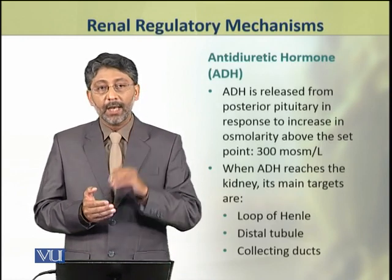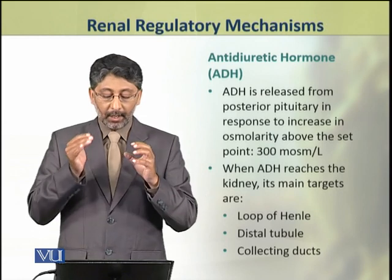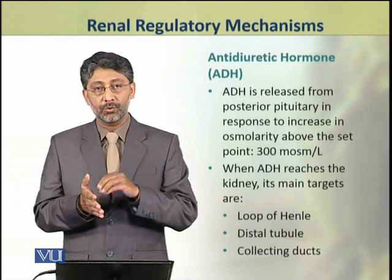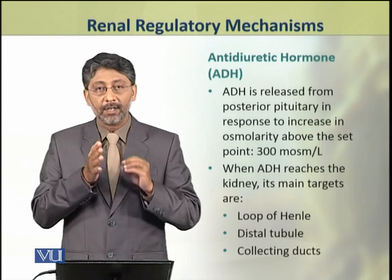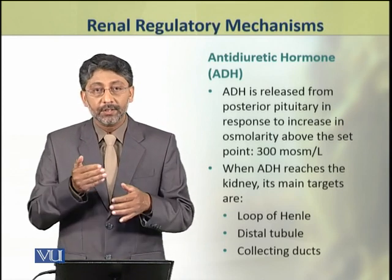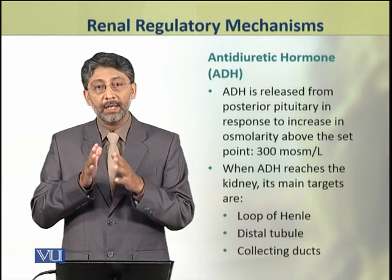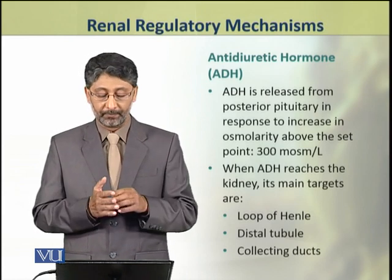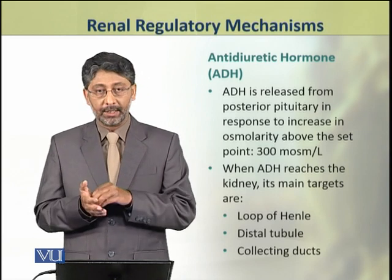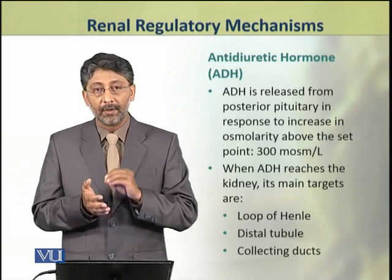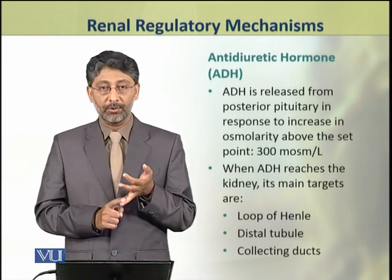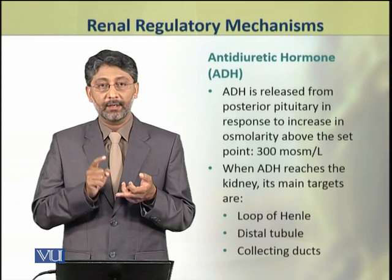The anti-diuretic hormone is released from the posterior pituitary in response to an increase in osmolarity above the set point, which is about 300 milliosmol per litre. When anti-diuretic hormone reaches the kidney, its main targets are the loop of Henle, distal tubule, and collecting ducts.